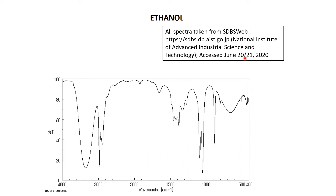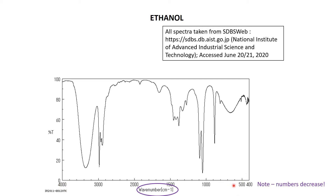I'm not going to cite every single spectrum on every single movie — they all came from this general source. So anyway, here's the spectrum of ethanol. I want first of all to look at the axes. On the bottom x-axis, that's the wave number in reciprocal centimeters. Notice that the numbers go down, so you have the high wave numbers on the left-hand side and the low wave numbers on the right-hand side.